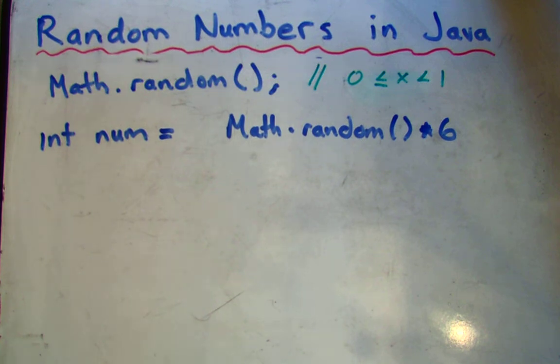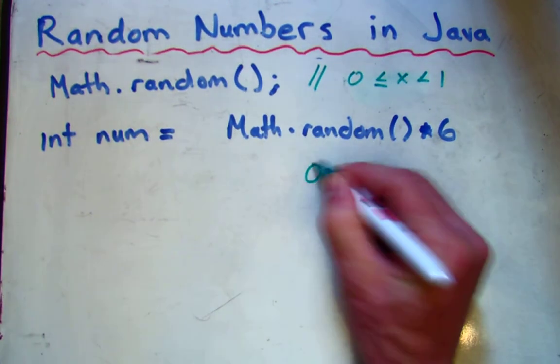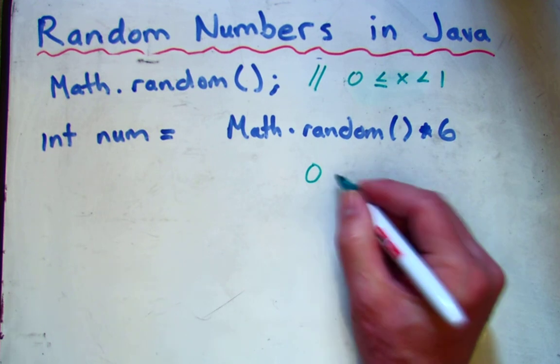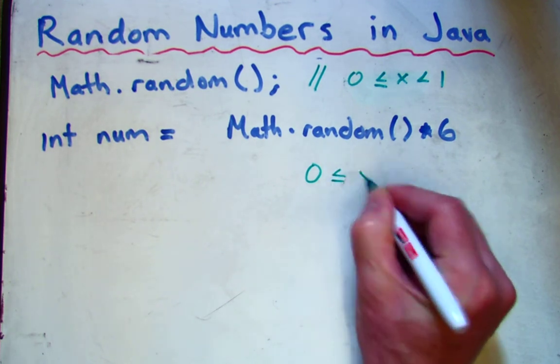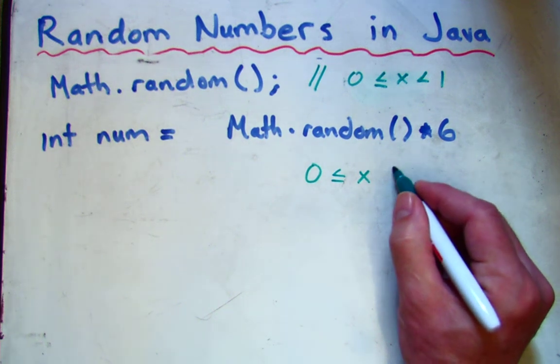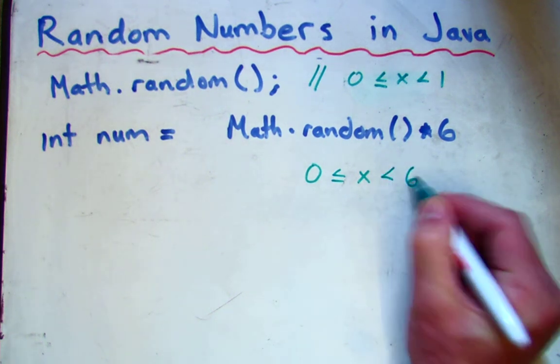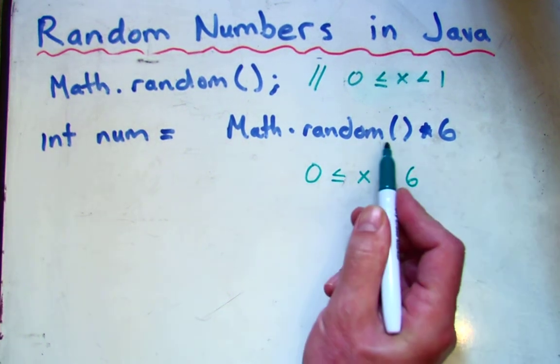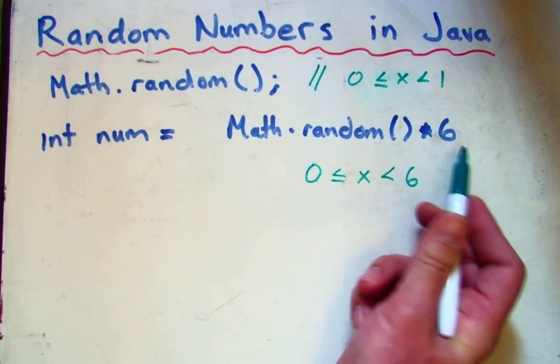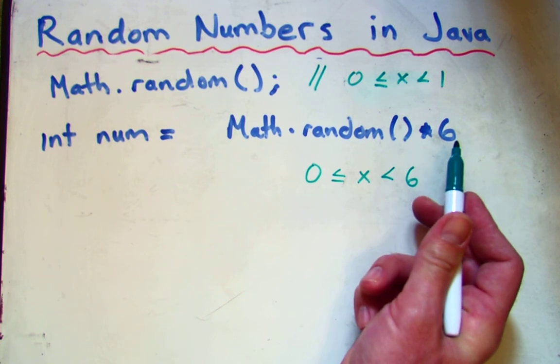That would, at the moment, give us a range of 0, right? If this part were 0, 0 times 6 is still 0. And at the biggest, it would be less than 6, because this could be 0.99999 times 6, but it's not going to quite reach 6.